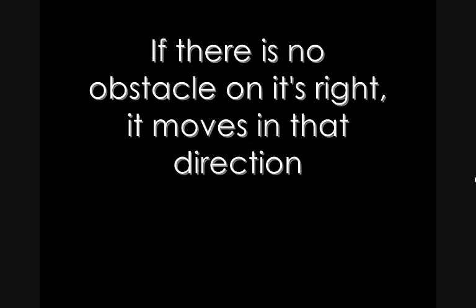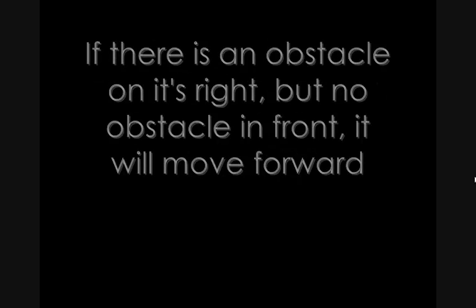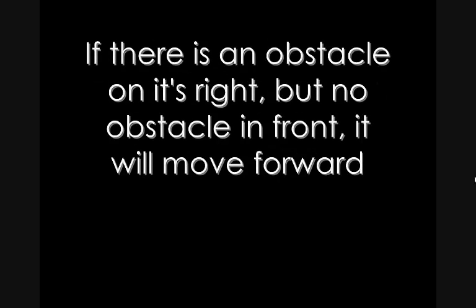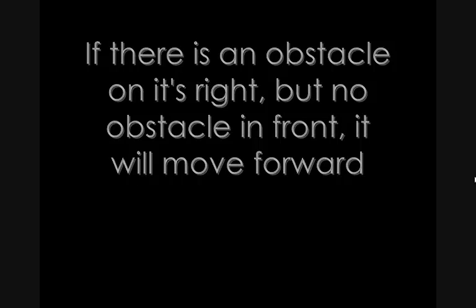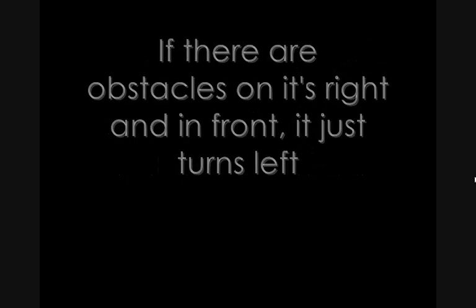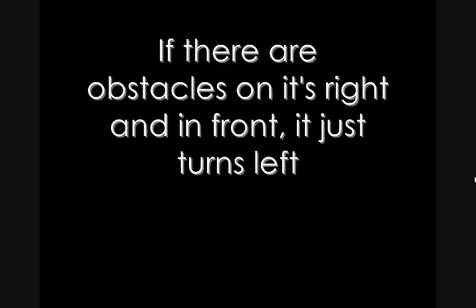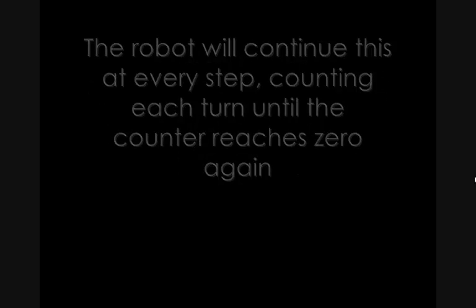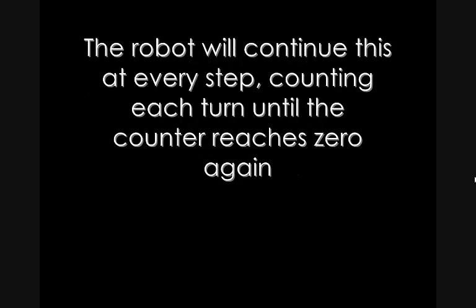If there is no obstacle on its right, it will move in that direction. If there is an obstacle on its right but no obstacle in front, it will move forward one block. If there are obstacles on its right and in front, it will turn left. The robot will continue this logic at every step, counting each turn until the counter reaches zero again.